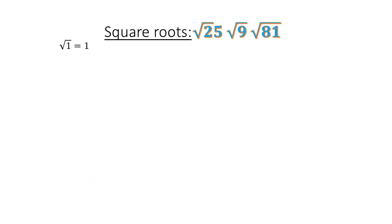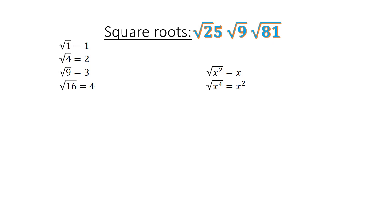Square root: square root of 1 equals 1. Square root of 4 equals 2. Square root of 9 equals 3. Square root of x to the power of 2 equals x. Square root of 16 equals 4. Square root of x to the power of 4 equals x to the power of 2. Square root of 25 equals 5. Square root of x to the power of 6 equals x to the power of 3.